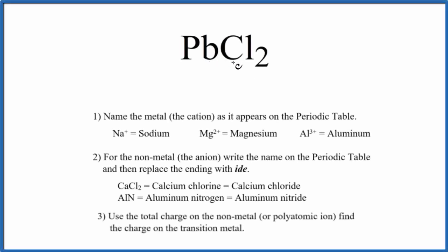To write the name for PbCl2, first we need to recognize we have a metal and then a non-metal. So a metal and a non-metal, that's going to be an ionic compound.